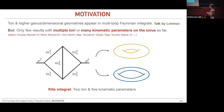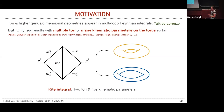The second reason why considering this kite integral family is interesting is because of the technical challenges involved. As we heard from Lorenzo on Monday, the appearance of torii or even higher-dimensional geometries with higher genera happens very often in higher orders of perturbative quantum field theory. Understanding these geometries better is really helpful in computing multi-loop Feynman integrals analytically, but only a few results have been obtained for cases with multiple torii or many kinematic parameters on the torii. The kite integral family has five kinematic parameters and is related to two torii.